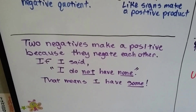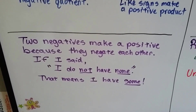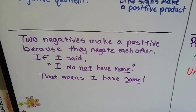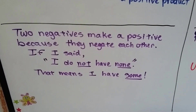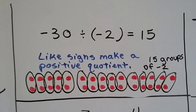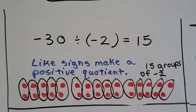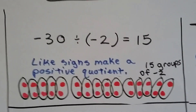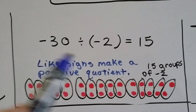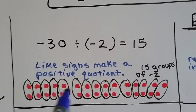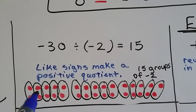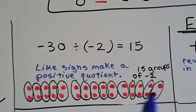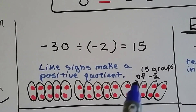So two negatives make a positive because they negate each other. Think of it this way: 'I do not have none' — if I do not have none, then I must have some. When we have negative 30 and we divide it by negative 2, it's going to equal a positive 15. We have like signs, so it's going to make the quotient positive. If I have 30 little red negative chips and I divide them into groups of two little red negatives in each group, there's going to be 15 groups of negative 2.